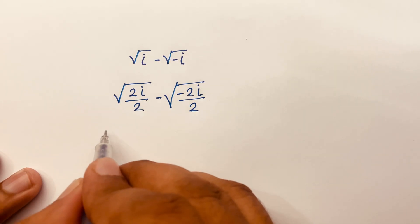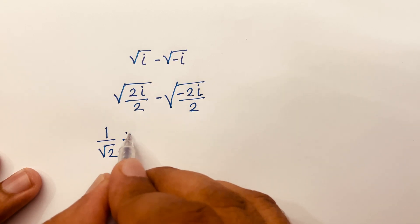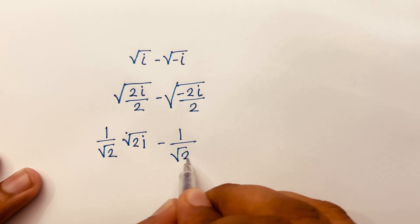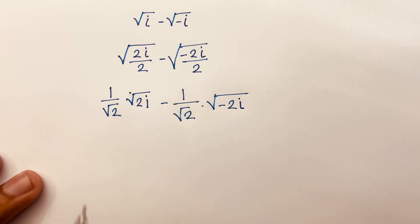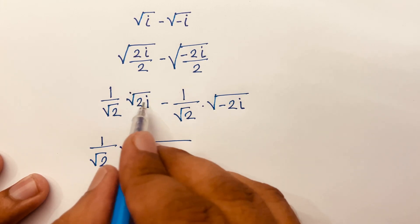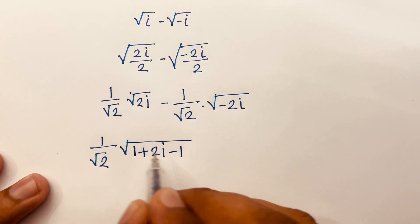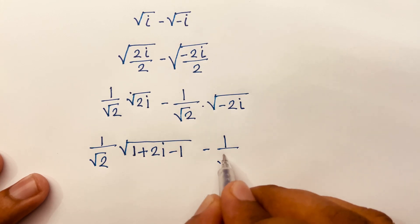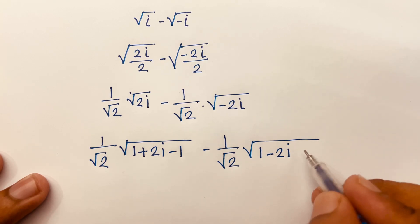Then I can say it will be 1 over square root 2 times square root 2i, minus 1 over square root 2 times square root minus 2i. Then I can say here is 1 over square root 2 and square root 2i, it will be 1 plus 2i minus 1. Look, 1 minus 1 is 0, and we find out 2i, minus 1 over square root 2 times square root 1 minus 2i minus 1.